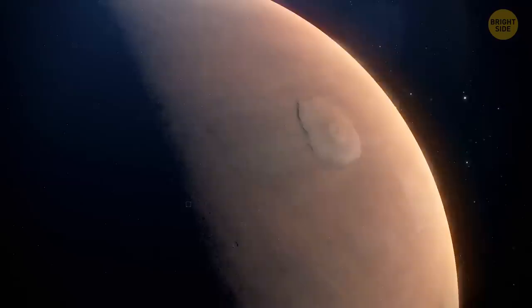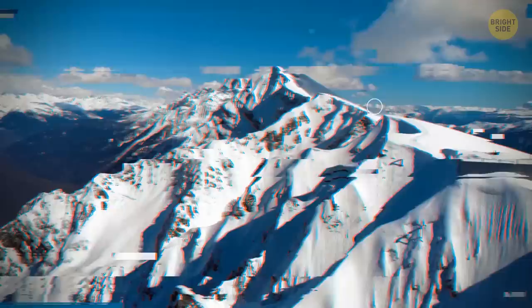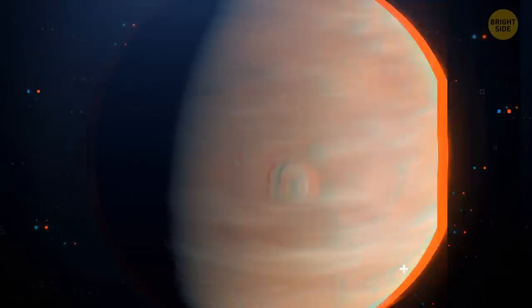Now, since we're on the subject of gigantic things, let's talk about Olympus Mons. This is the largest volcano in the solar system, and it's on Mars, too. It's three times as tall as Mount Everest on our planet. And that's the tallest mountain above sea level. And the base of Olympus Mons is as large as the state of New Mexico.